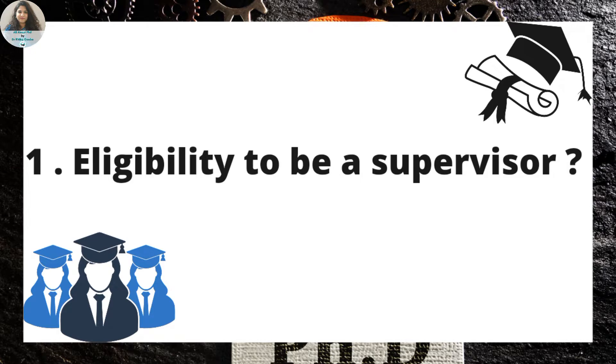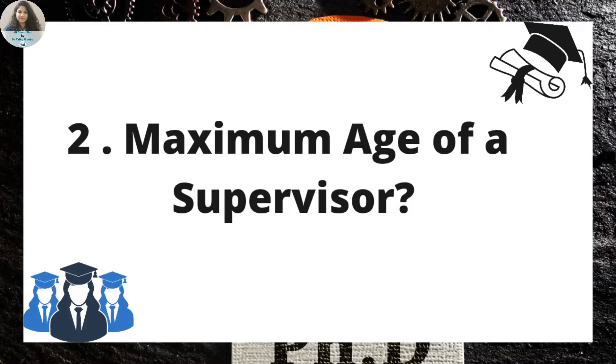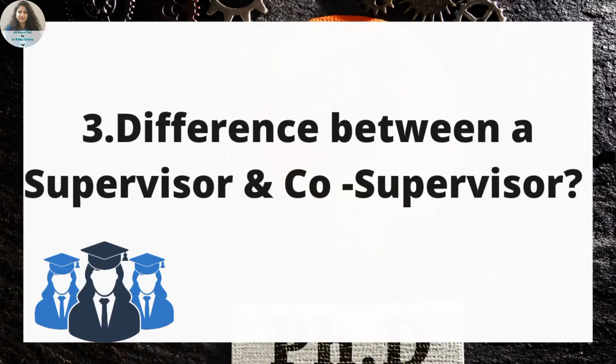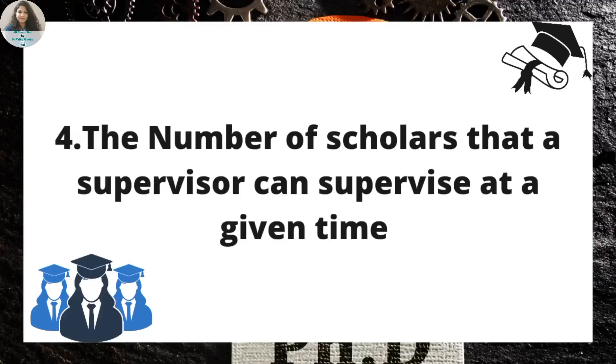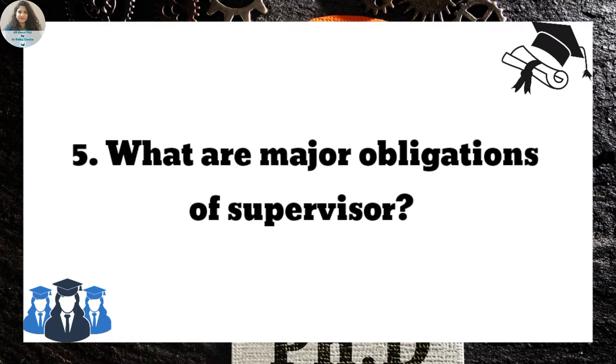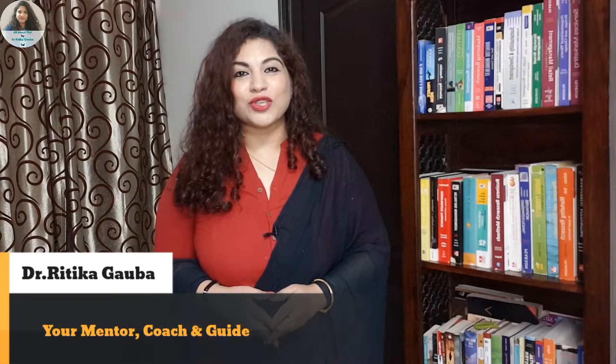This video has been divided into five sections. In section one, we are going to talk about what is the eligibility of being a supervisor in India. Then we are going to talk about the difference between a supervisor and a co-supervisor and who can be a co-supervisor. We will also talk about what is the maximum age till which you can continue being a supervisor, how many students you can guide at one particular time, and what are the major obligations of a research supervisor. This is Dr. Hrithika Gaba, your PhD coach, mentor and guide.